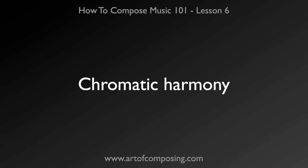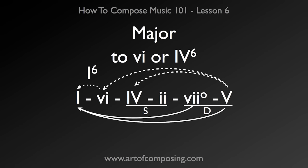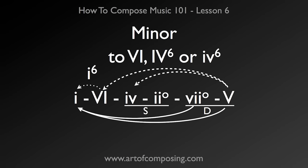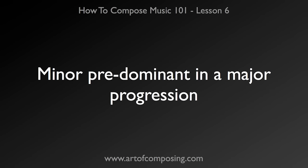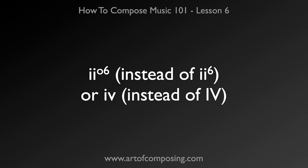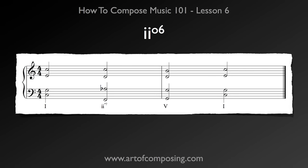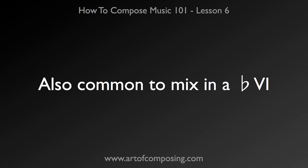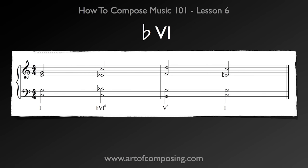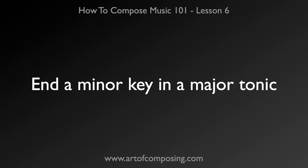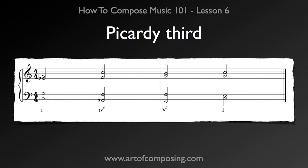Finally, I would like to talk about chromatic harmony just a little bit. If you remember from the previous lesson, you had a chart. The great thing about this chart is it allows you to use it for plain diatonic harmony and also for mixing it up with chromatic harmony, because chord functions are generally interchangeable between major and minor. Some of the most common are the minor predominant in a major progression — this can be done through the use of the 2 diminished 6 or the minor 4 chords. It is also very common to mix in the flat 6 chord with your major harmonies. If you are in a minor key, it is not that uncommon to end in a major tonic, which is also known as the Picardy third.